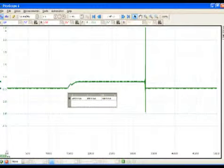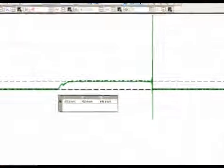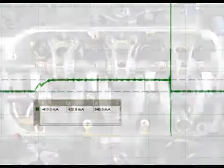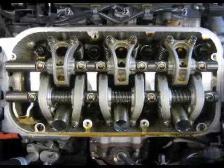Here is a current ramp of the VCM solenoid. It's a high-side driver that uses about 800 milliamps to an amp. Here are the front bank cylinders: four, five, and six.